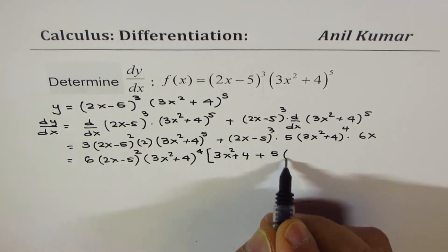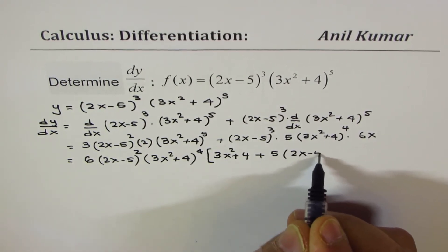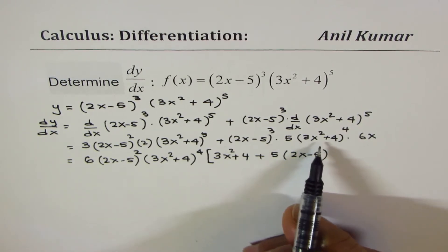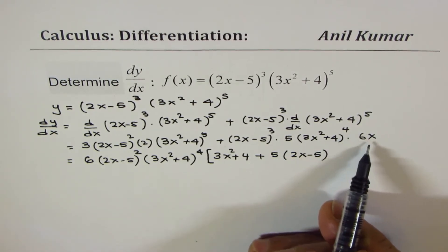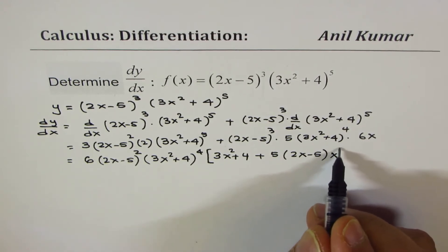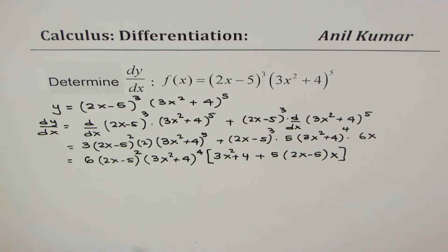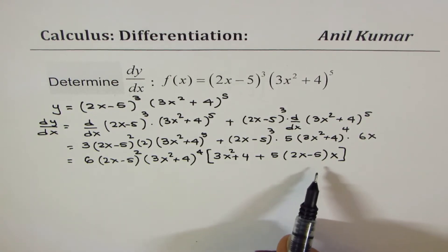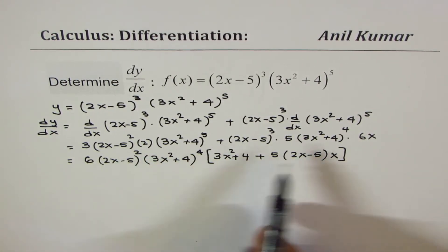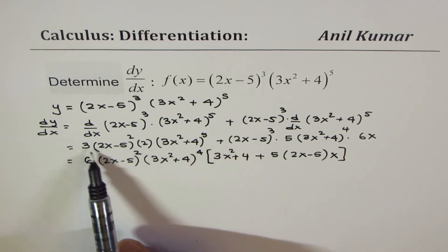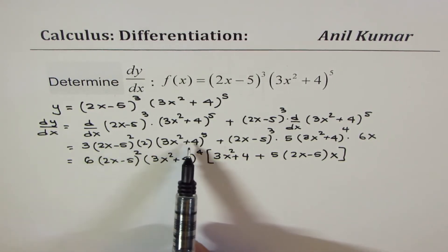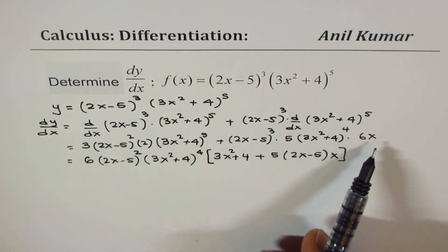What remains here is 3x squared plus 4, and from this side we have 2x minus 5 times 5, because 6x is already taken care of. So we have plus 5 times 2x minus 5. The 3x squared plus 4 is to the power of 4, and 6x, so x is also there. So let me write down x here. We have to be careful at this stage to ensure we've taken care of everything — so we have 3 times 2, which is 6, and these two factors, plus 5, 6, x, everything taken care of.